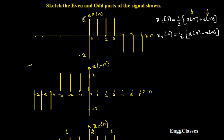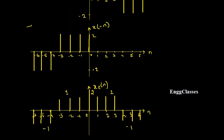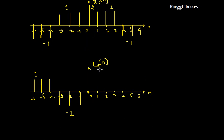At position 0, I have amplitude 2 in both signals — 2 minus 2 gives 0. So at position 0 the odd part has amplitude 0. Moving to positions 1, 2, and 3, x(n) has amplitude 2 and x(-n) has nothing — 2 minus 0 gives 2, divided by 2 gives 1. So at positions 1, 2, and 3 I sketch amplitude 1.